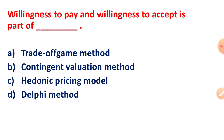Willingness to pay (WTP) and willingness to accept (WTA) are part of which method? WTP and WTA are methods that are part of the contingent valuation method. Option B is the right answer.